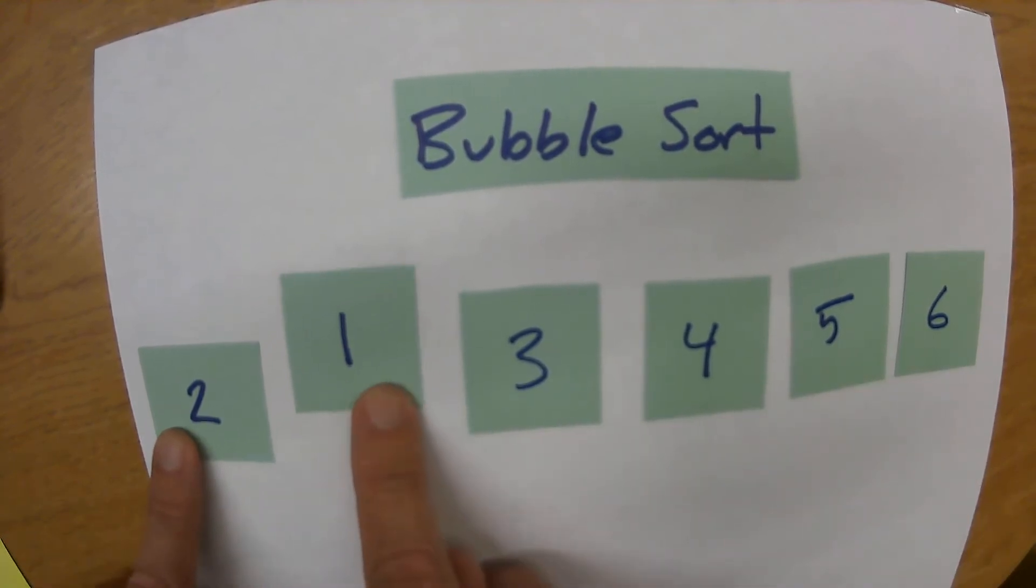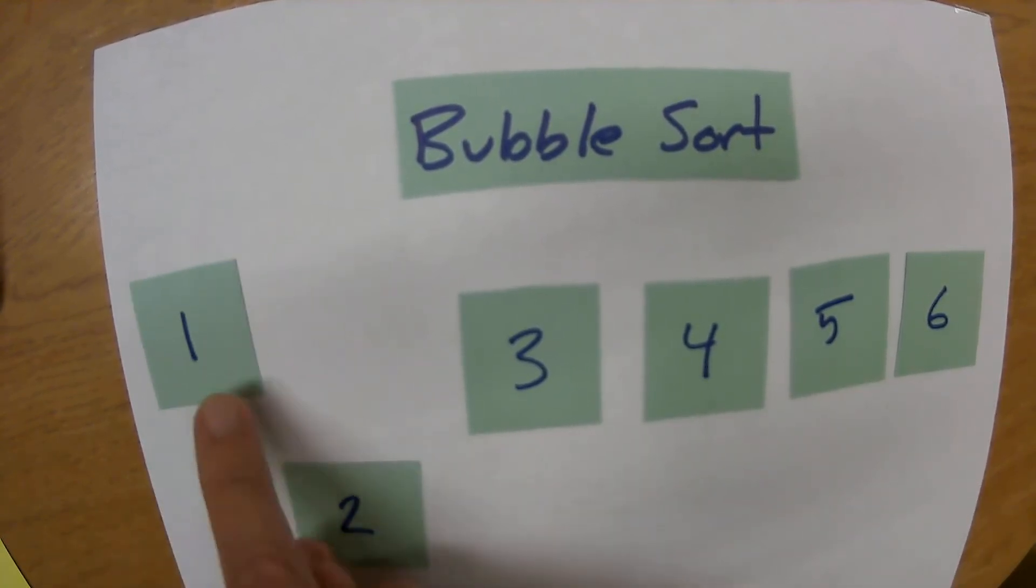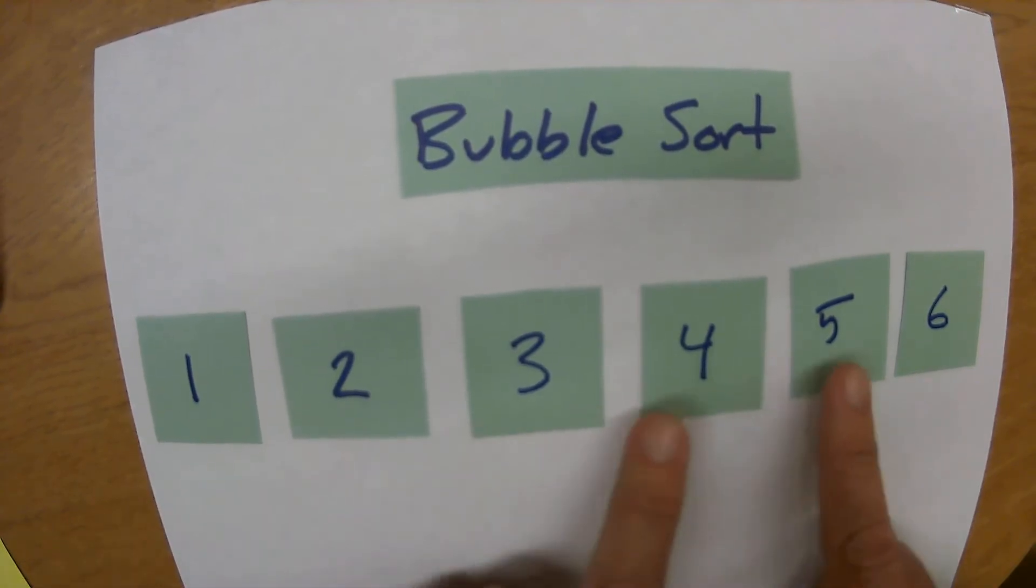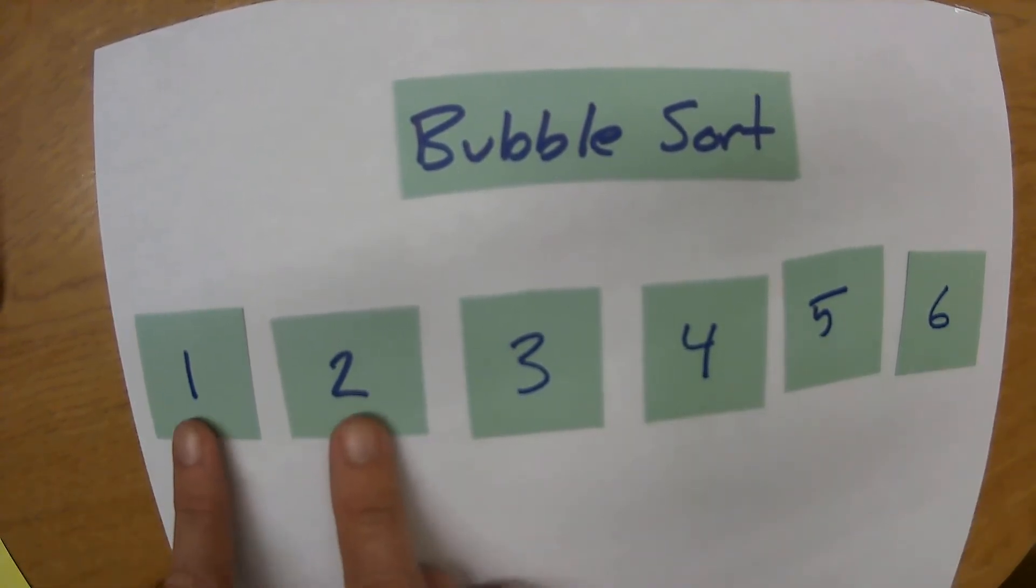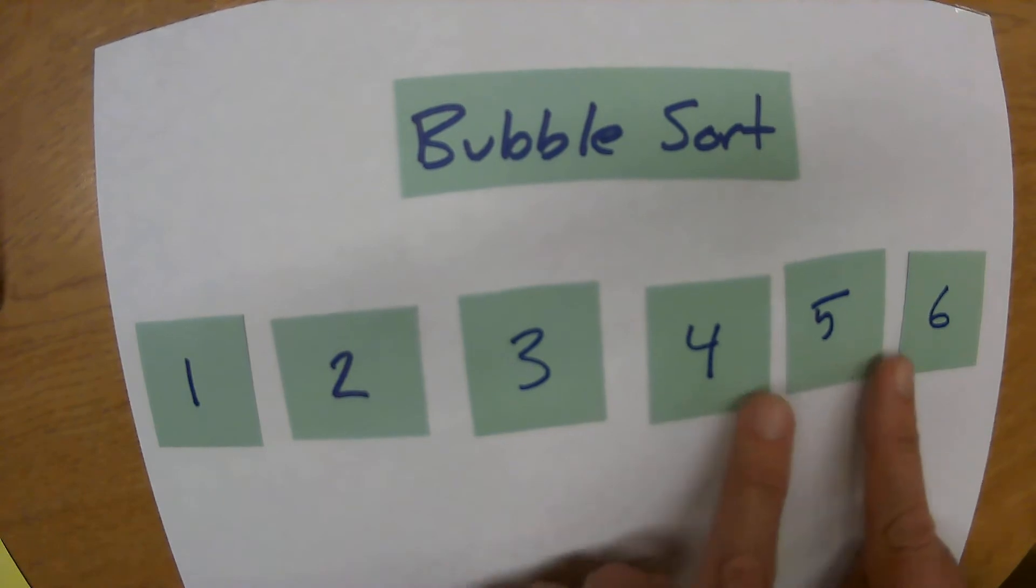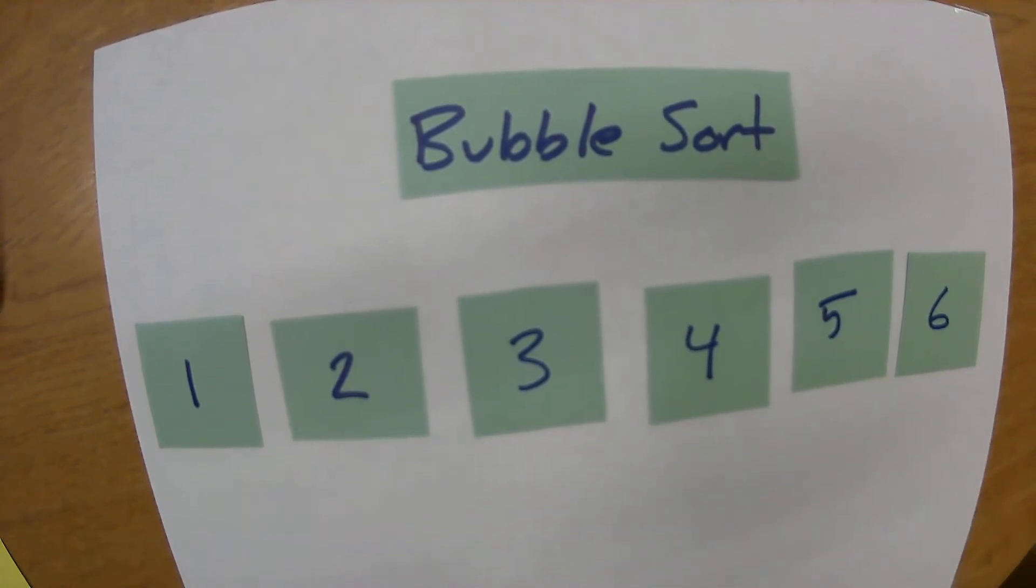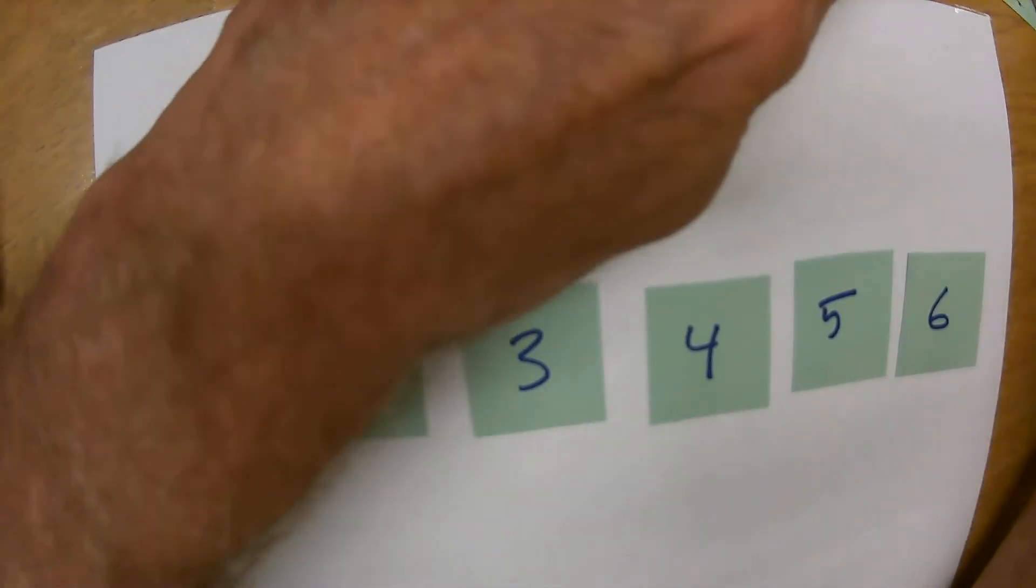We go back again and those are incorrect so we swap them, and that's good, good, good, good. And then we can go one pass through again. Once you can make a pass through and no swaps needed to be made then you know you have a sorted list. So this is a pretty easy one to implement in code.